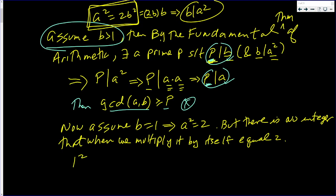But there is no integer that when we multiply it by itself equals 2. And after all, 1 squared is 1 and 2 squared is 4. So to get 2, which is between 1 and 4, we're going to have to multiply a number between 1 and 2 by itself to get back 2. But no number between 1 and 2 is an integer.